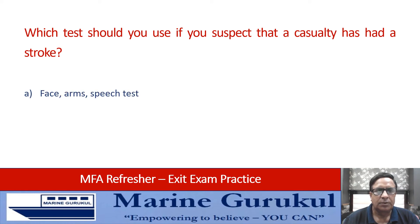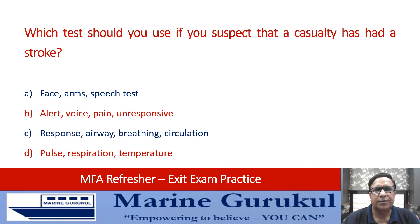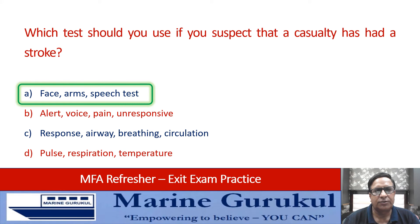Which test should you use if you suspect a casualty has had a stroke? Face Arms Speech Test, Alert Voice Pain Unresponsive Test, Response Airway Breathing Circulation Test, or Pulse Respiration Temperature Test? The correct answer for a casualty of stroke is the Face Arms Speech Test — answer A.